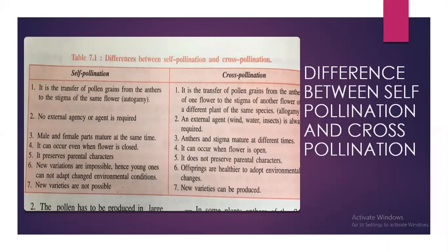In self-pollination, new variations are impossible; hence young ones cannot adapt to changed environmental conditions. In cross-pollination, offspring are healthier and better able to adopt environmental changes. In self-pollination, new varieties are not possible, but in cross-pollination, new varieties can be produced.